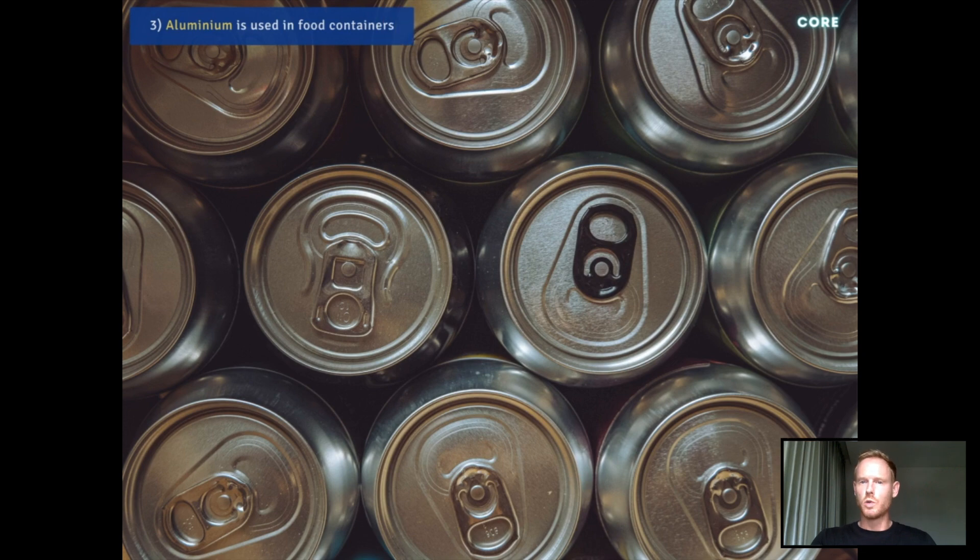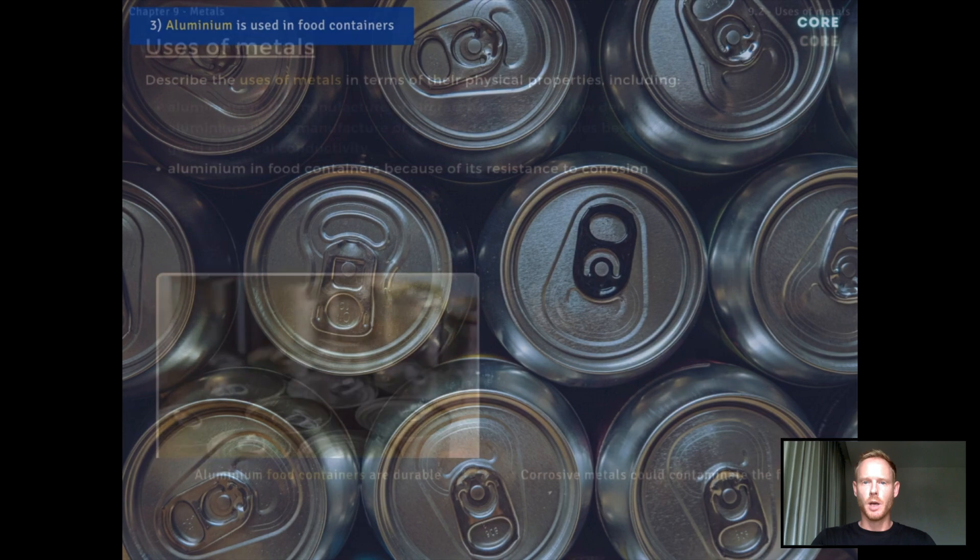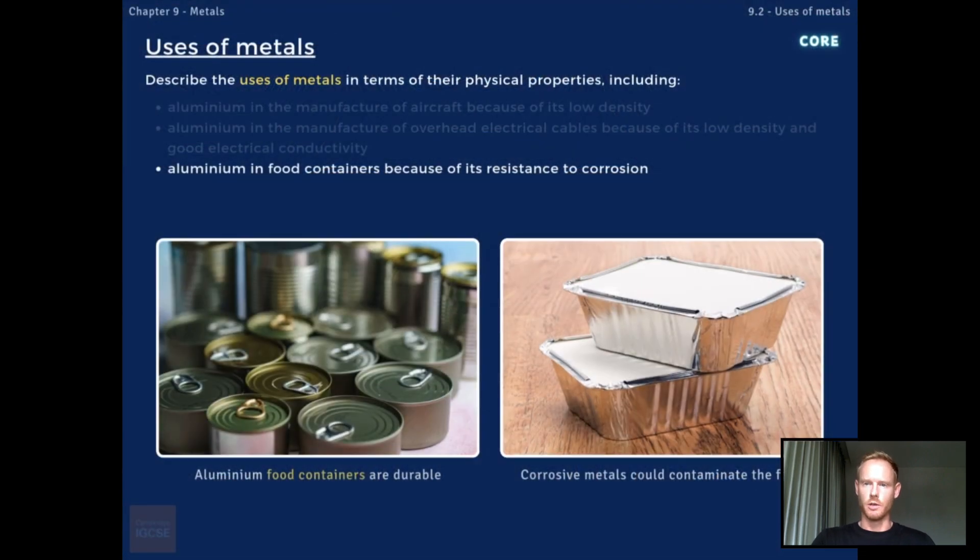Number three, aluminium is also used in food containers such as baking trays and cans because of its resistance to corrosion, which means it doesn't rust. This makes it durable or long-lasting and protects food from contamination.